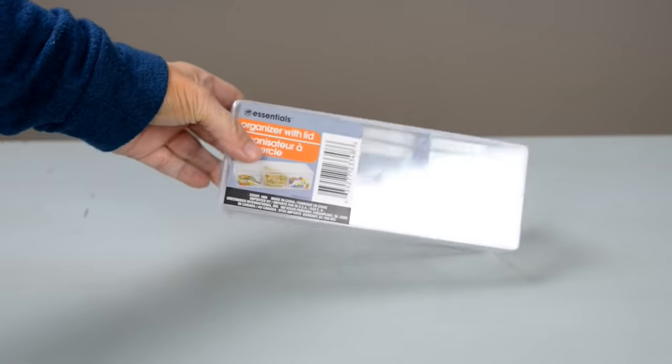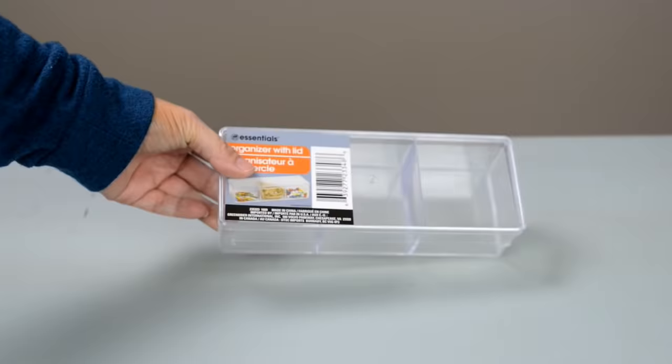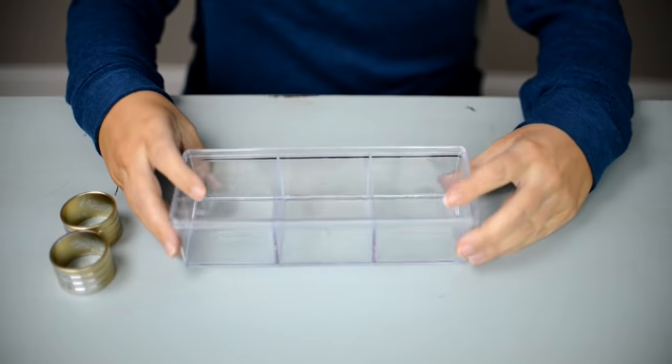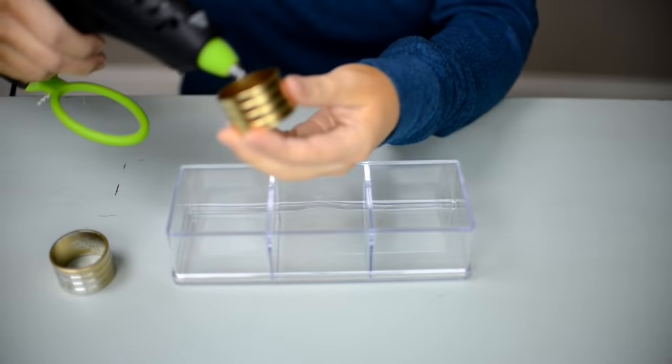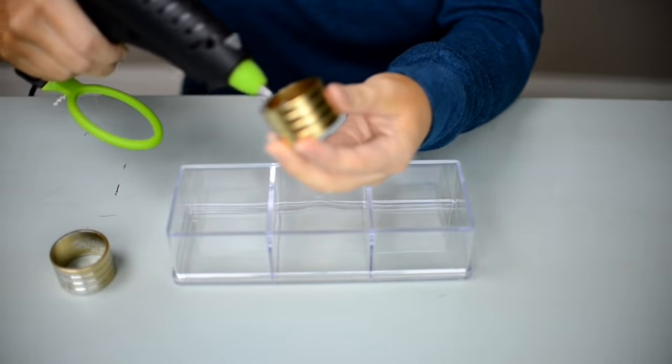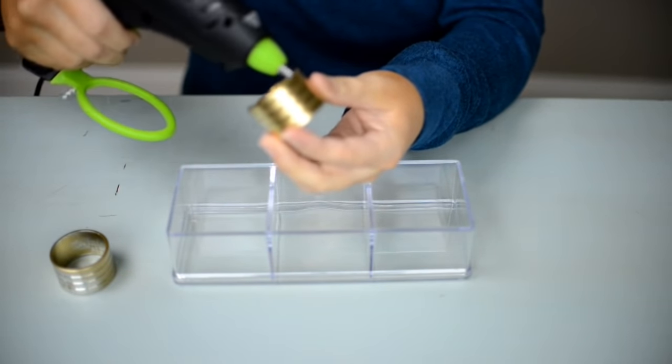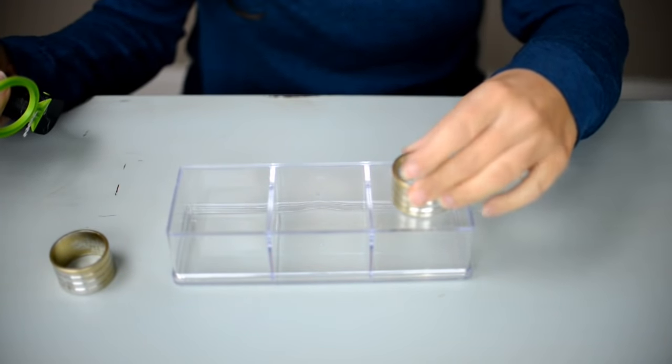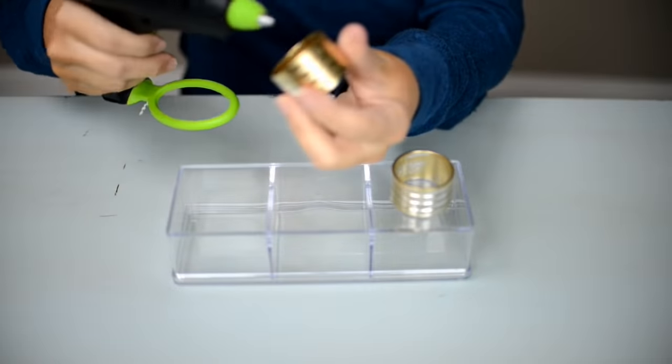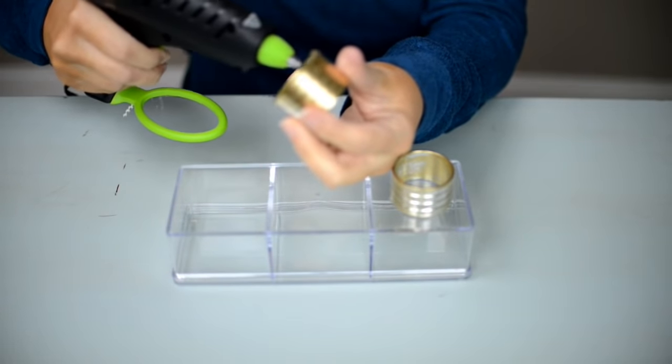Next, I'm making another storage container. You could put anything in this that you like. I'm using those same gold napkin rings from earlier, but I'm just using two of them. I'm going to hot glue two to the bottom. Then I'm also using the other wine stopper that I bought as my handle on the top.